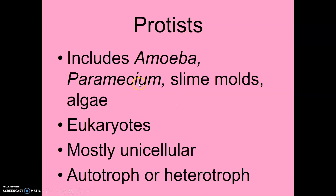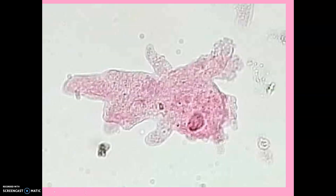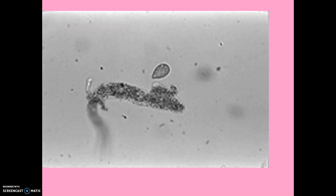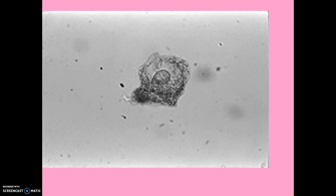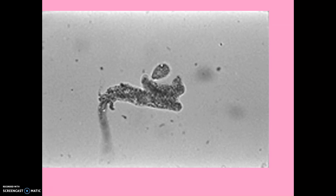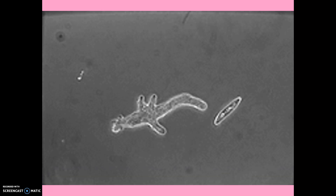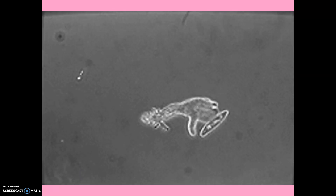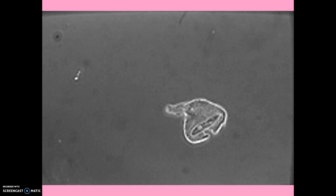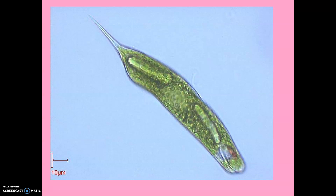Protists — examples include amoeba, paramecium, slime molds, and algae. Even though these are eukaryotic and have a nucleus, most of them are unicellular, though there might be a few that are multicellular. They can be autotrophic or heterotrophic. Here's an amoeba — here it is engulfing something, which makes it a heterotrophic protist because it's getting nutrients from another source. Notice it's one cell and it does have a nucleus.